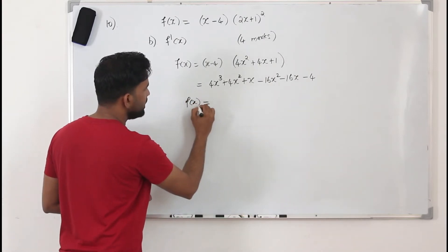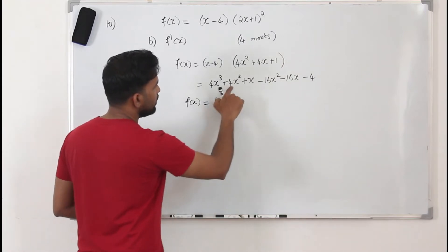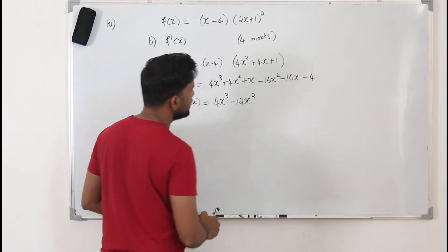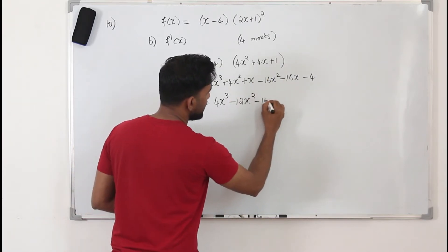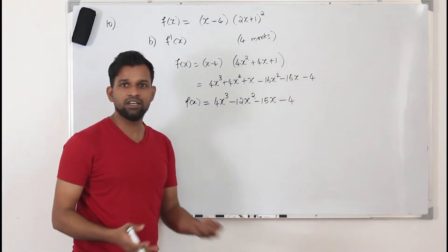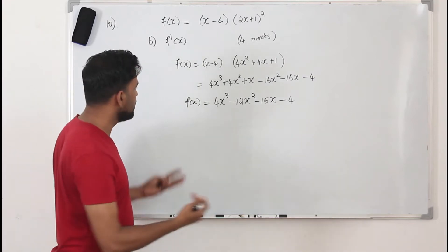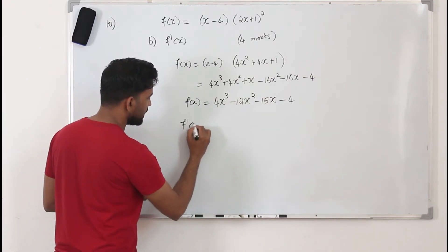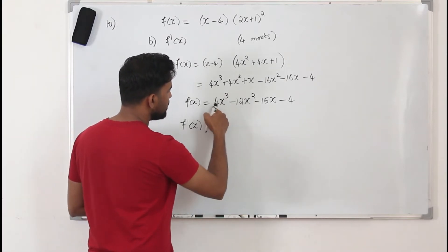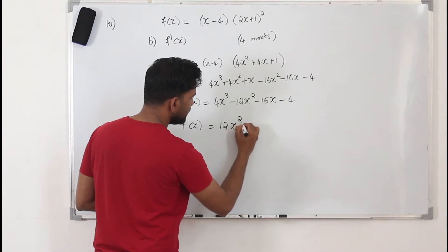So F of x will be 4x³, and 4 minus 16 gives minus 12x², then 1 minus 16 gives minus 15x, minus 4. We've simplified the expression. Now we can find F'(x) — just differentiate it. So 4 times 3 gives 12x², and differentiating minus 12x² gives minus 24x.